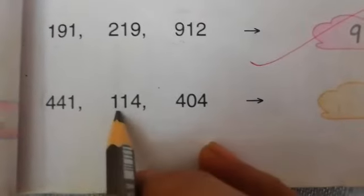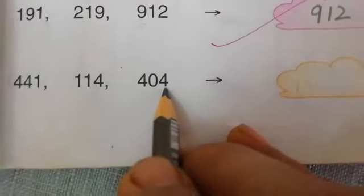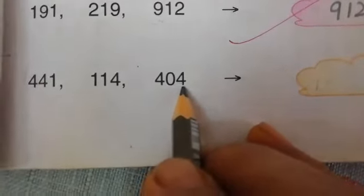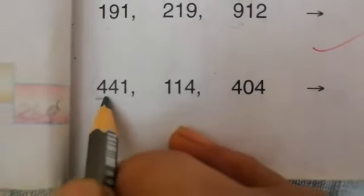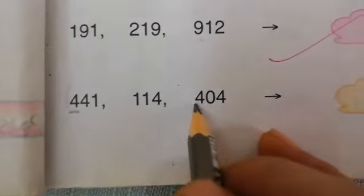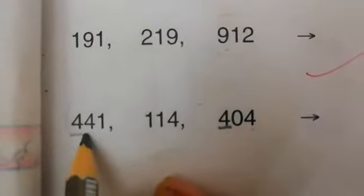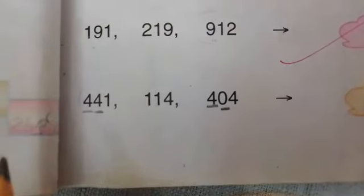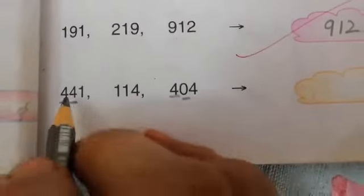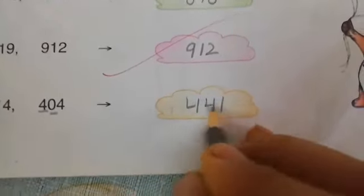Read the number 441, 114 and 404. Now which number is the largest number? First we will check hundreds: 400 and 400 are the same. Now we have to check tens. 4 tens and 0 tens. Which tens is larger? 4. It means 441 is the largest number.